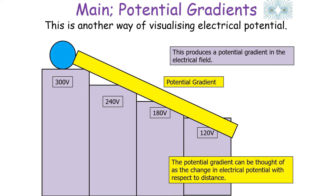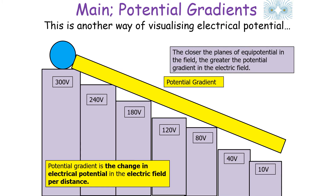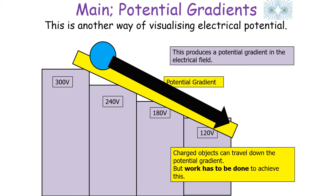This produces a potential gradient in the field when you've got a potential difference. The potential gradient can be thought of as the change in electrical potential with respect to distance, or the change in electrical potential in the electrical field per a certain distance. The closer the planes of equipotential in the field, the greater the potential gradient. Charged objects can travel down the potential gradient or up the potential gradient, and in both examples work has to be done to achieve this.